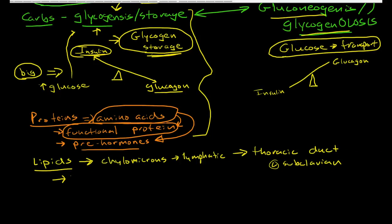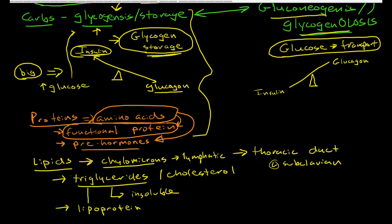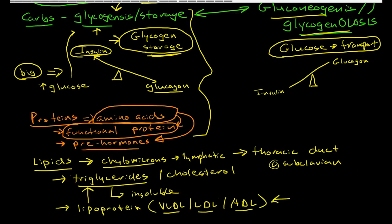That's how lipids get into the circulation, and then they make their way to the liver via the bloodstream. Once they get to the liver, the liver processes these chylomicrons and breaks them down into triglycerides and cholesterol. Since triglycerides are insoluble and difficult to circulate through the bloodstream, the liver has a significant role in producing lipoproteins that can reversibly bind with these triglycerides and transport them. That's how you get the very low-density lipoproteins, low-density lipoproteins, and high-density lipoproteins.